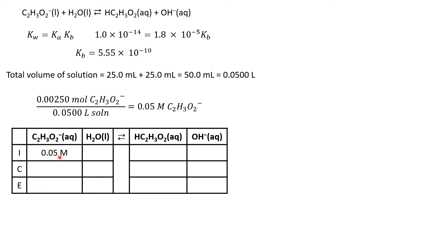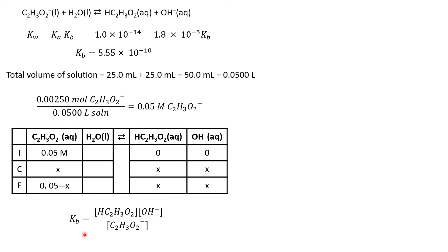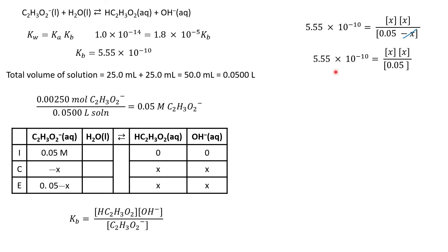Now I'm ready for my ICE table. Initially, my concentration of acetate is 0.05 M and I have no products, so equilibrium shifts right: negative X for acetate and positive X for both products, giving my equilibrium concentrations. Writing the expression for Kb and plugging in my already-calculated Kb with all equilibrium expressions, I want to drop the minus X. Since Kb is 10 to the negative 10, I can drop that term, simplifying the calculation significantly.